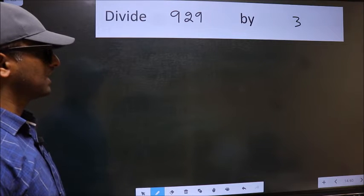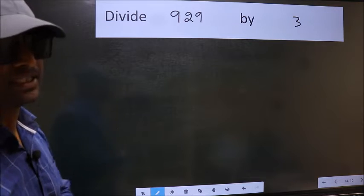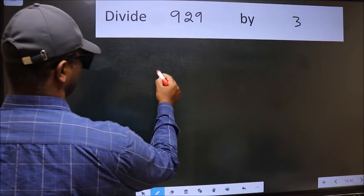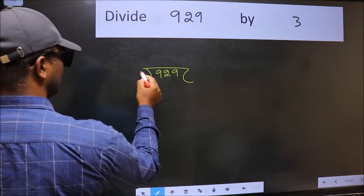Divide 9.29 by 3. To do this division, we should frame it in this way: 9.29 and 3 here.